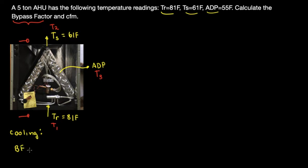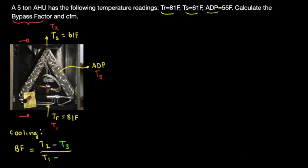For cooling, the bypass factor formula is: bypass factor equals temperature two minus the ADP (apparatus dew point, temperature three), divided by temperature one minus the ADP (temperature three). The ADP is highlighted because it's very important. This formula uses supply temperature (T2), return temperature (T1), and apparatus dew point (T3).